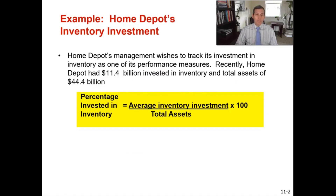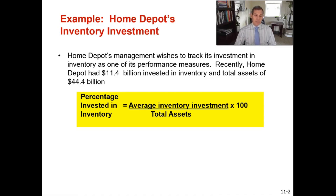Our very first metric is assets committed to inventory. Let's use Home Depot as our example. Home Depot management wishes to track its inventory investment as one of its performance measures. Recently, Home Depot had $11.4 billion invested in inventory and their total assets were $44.4 billion.